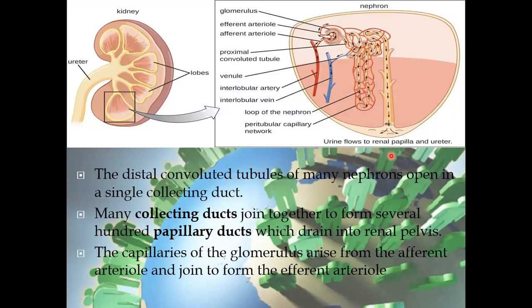The distal convoluted tubules of many nephrons open into a single collecting duct. Many collecting ducts join together to form several hundred capillary ducts that drain into the renal pelvis. The capillaries of the glomerulus arise from afferent arterioles and join to form efferent arterioles.